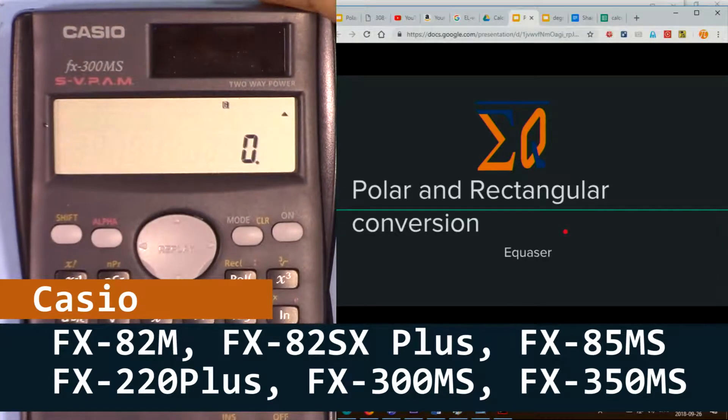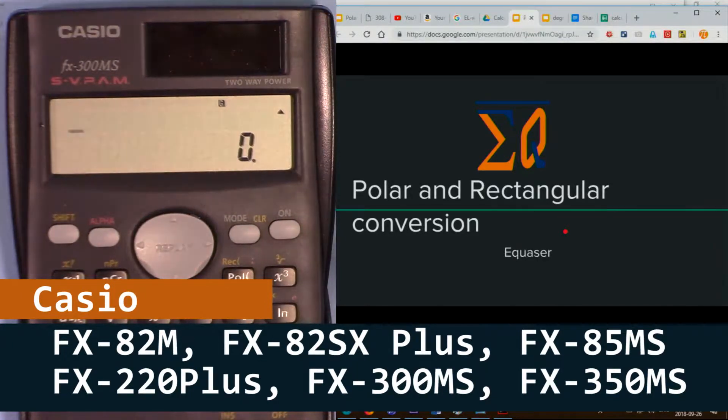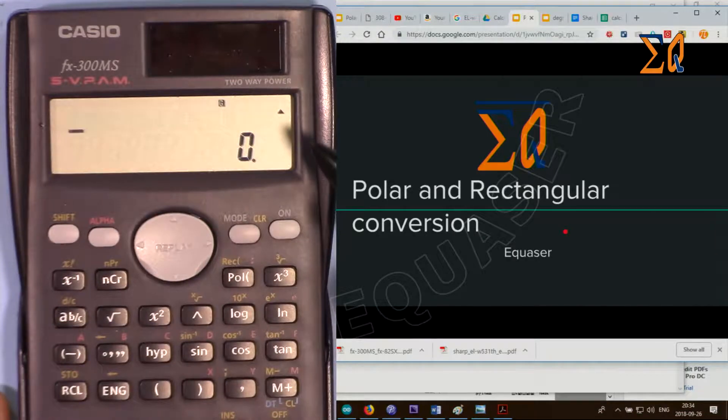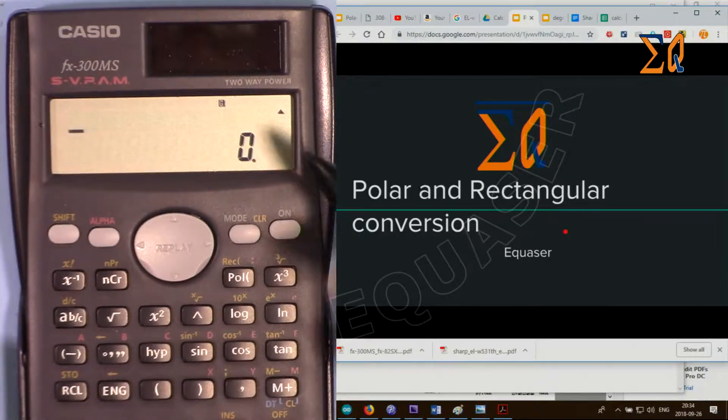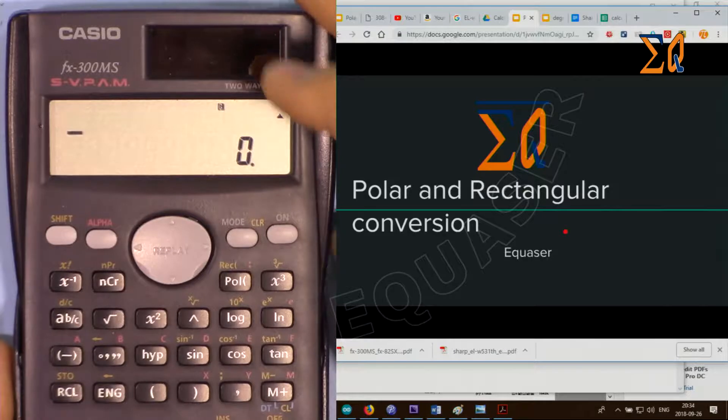Hi, welcome to a calculator tutorial by Equasus. In this video I'm going to show you how you can convert polar to rectangular or Cartesian coordinates using this Casio calculator.